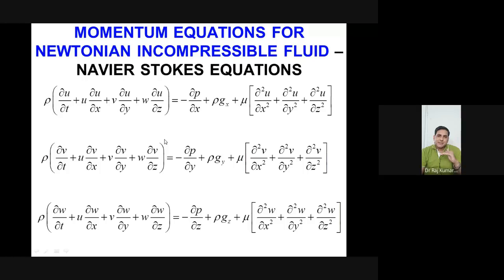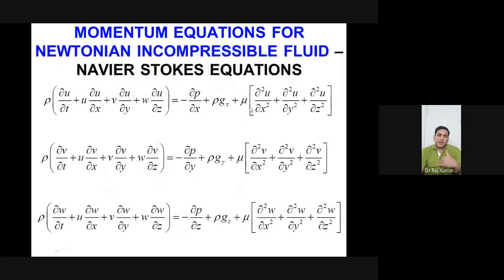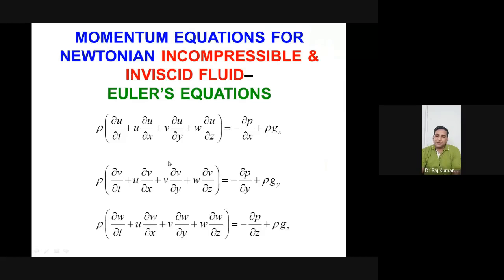Now let's see the applications of Navier-Stokes — that's the next important part. If you have an ideal or inviscid fluid, viscosity tends to zero, so the viscosity terms in all three equations get cancelled. You end up with: rho*(del-u/del-t + u*del-u/del-x + v*del-u/del-y + w*del-u/del-z) = minus del-p/del-x + rho*gx. These are called the Euler equations — momentum equations for incompressible inviscid flow.